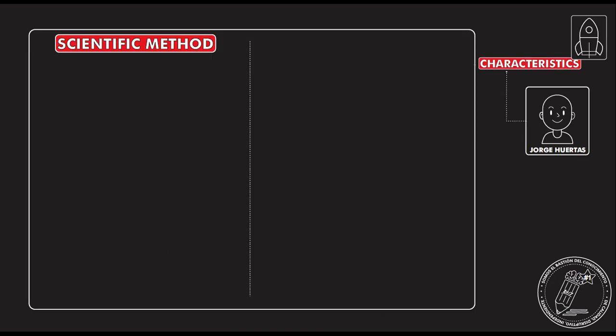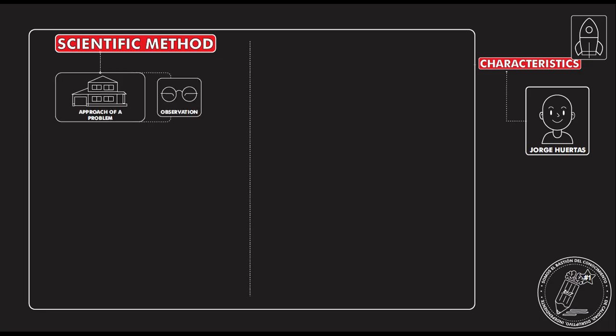We're going to start talking about the Scientific Method. The first thing you need to know when developing a project is the approach of a problem. The approach of a problem is developed with observation — you realize there is something, you want to focus on something specific, and it helps you to observe the situation. After you observe, you start formulating different hypotheses. Hypotheses are possible ideas or explanations to understand a situation, a phenomenon, or the causes of a specific situation.